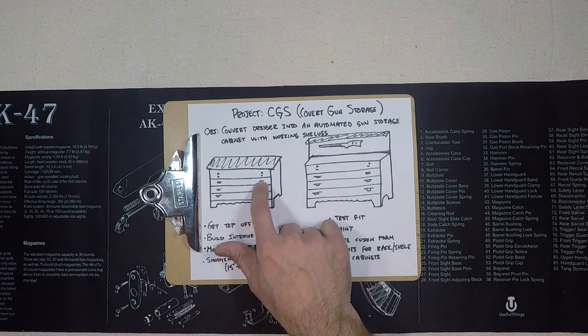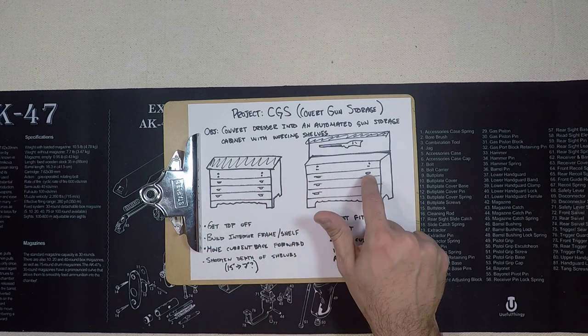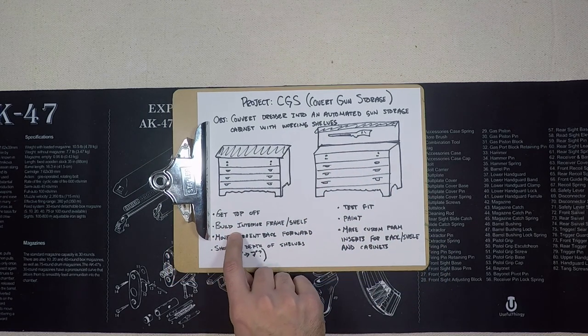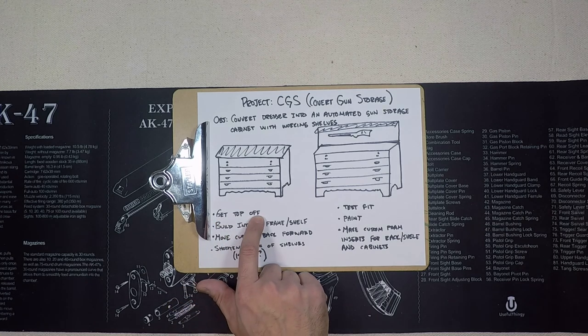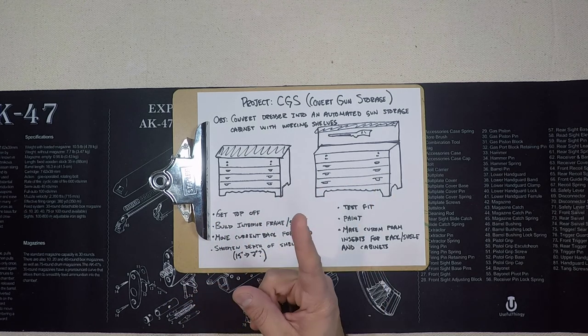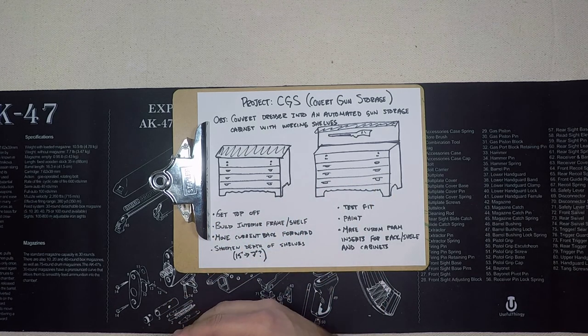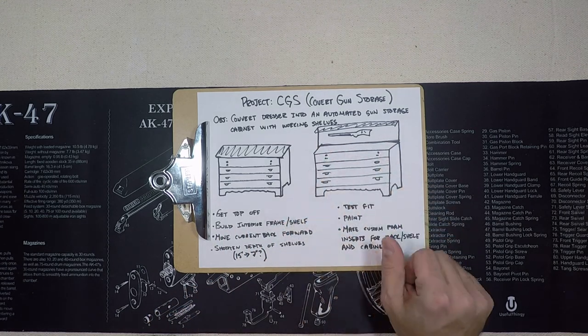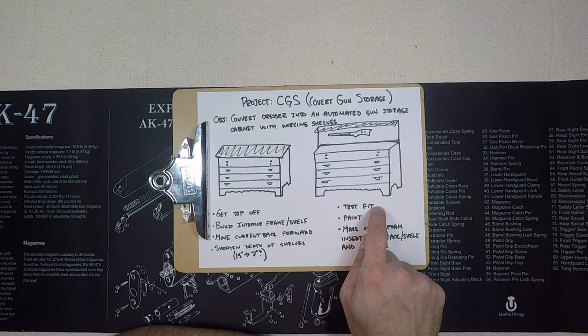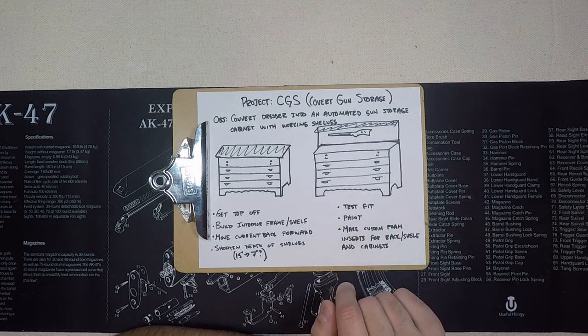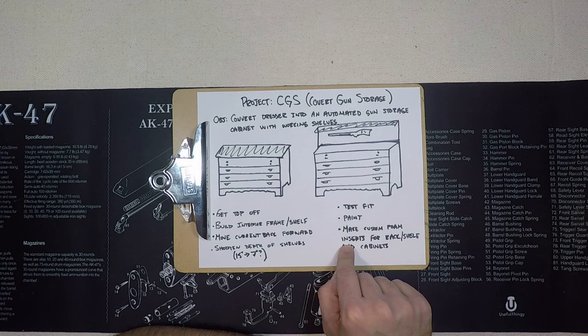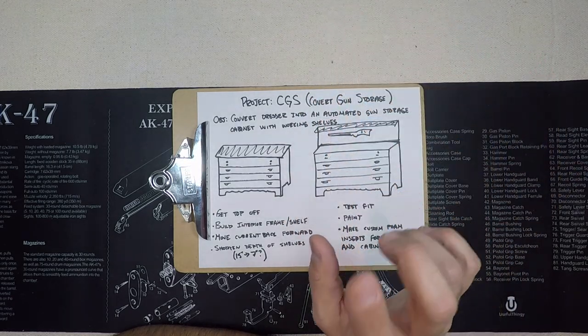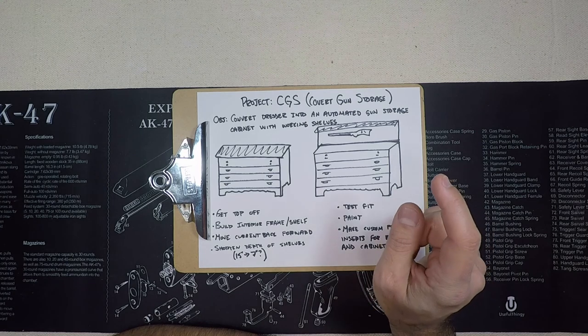What I want to know is how can we convert a current dresser into one of these. The steps: get the top off, build interior frame shelf to the dimensions of the current cabinet, do a test fit, paint job, and make custom foam inserts for the rack and shelf so they sit nicely in there, and also maybe for the drawers.